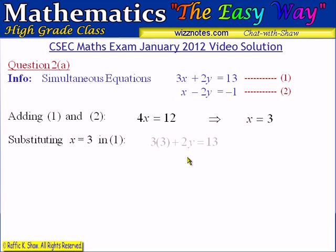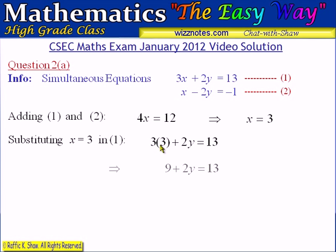Substituting 3 for x in equation 1, you end up with 3 multiplied by 3 plus 2y equals 13. We simply need to solve this for y. So 3 multiplied by 3 is 9, giving us 9 plus 2y equals 13.